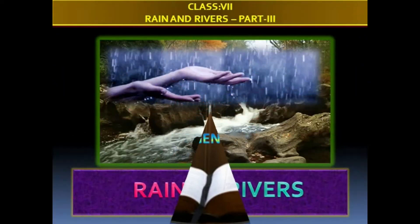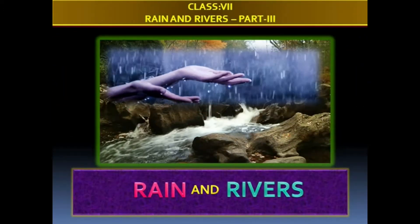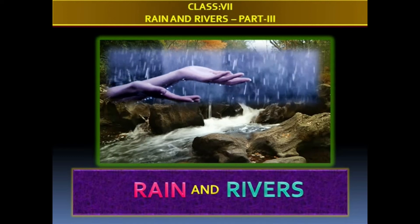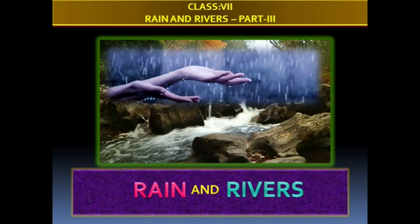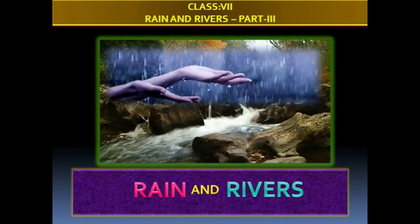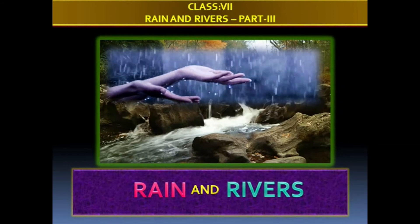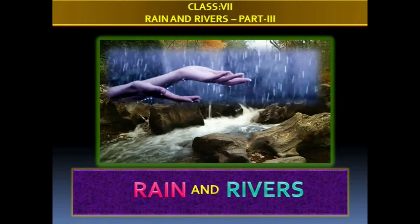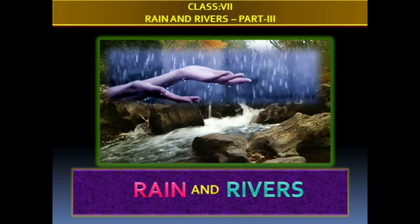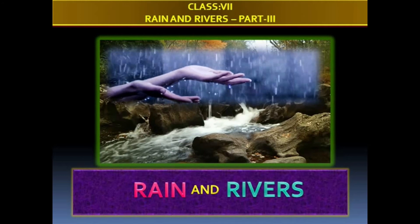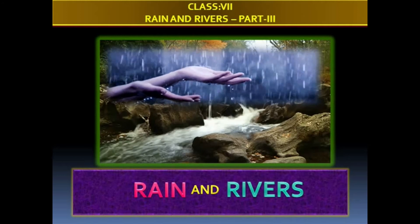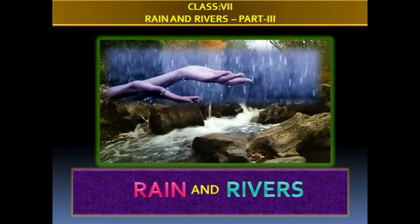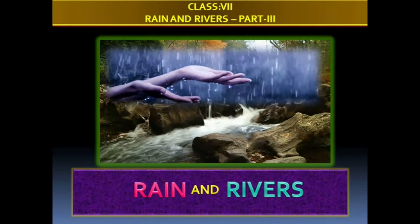Dear children, today we are going to learn the third part of rain and rivers. In the previous session, we learned: illustrate rain and rivers, define evaporation, explain the formation of clouds and rain, interpret winds and clouds, elaborate rainfall in Andhra Pradesh, and how to make a rain gauge.